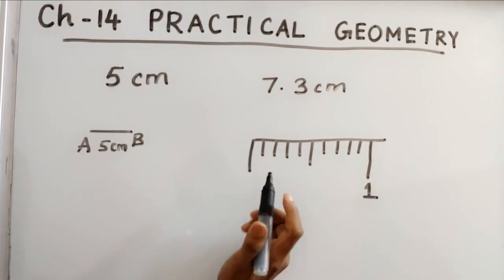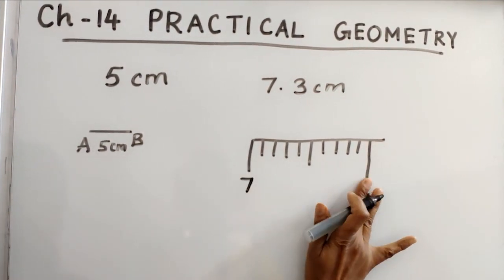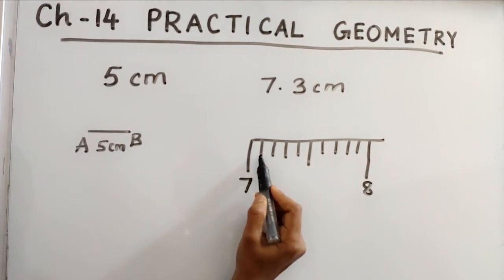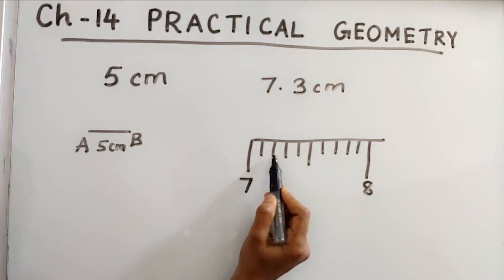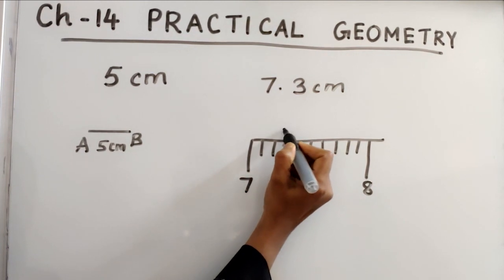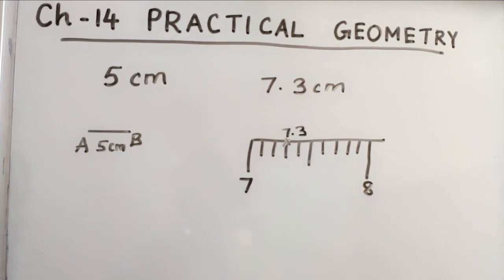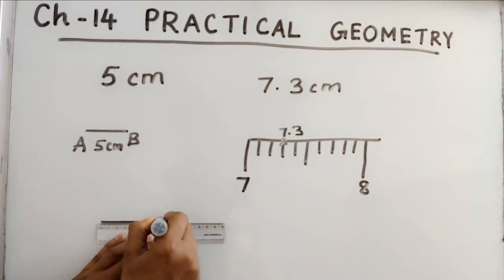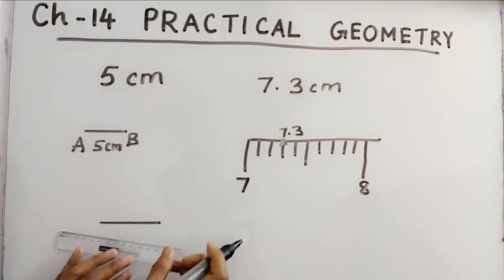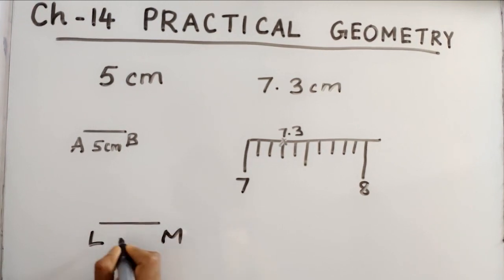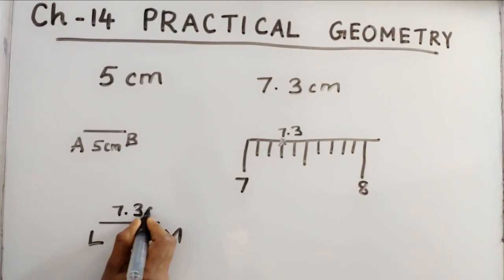After 7, in between 7 and 8, the third division is 7.3 — first division is 7.1, second division is 7.2, third division is 7.3. So we start from 0 and draw till 7.3. We can name this line segment LM, and this is 7.3 cm.